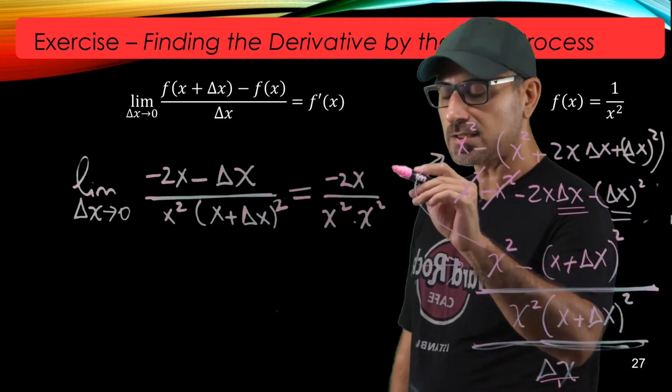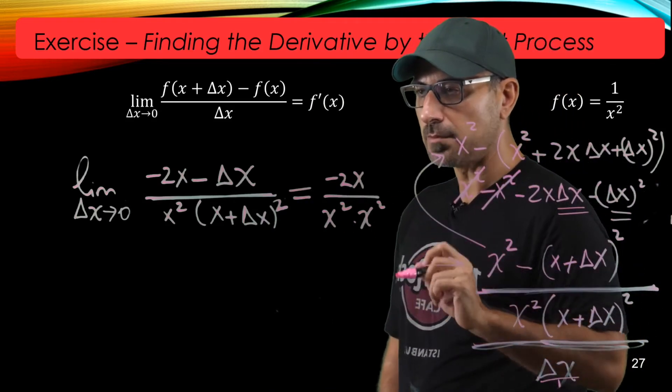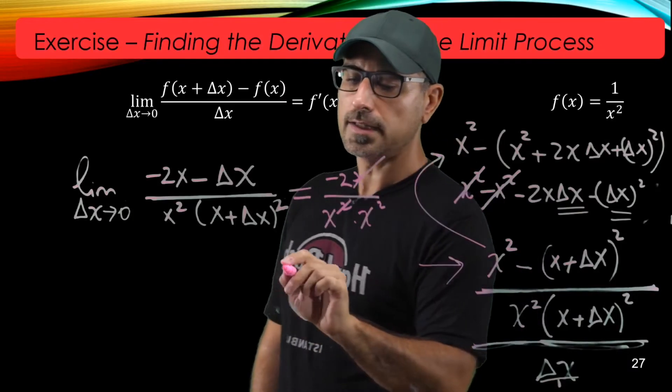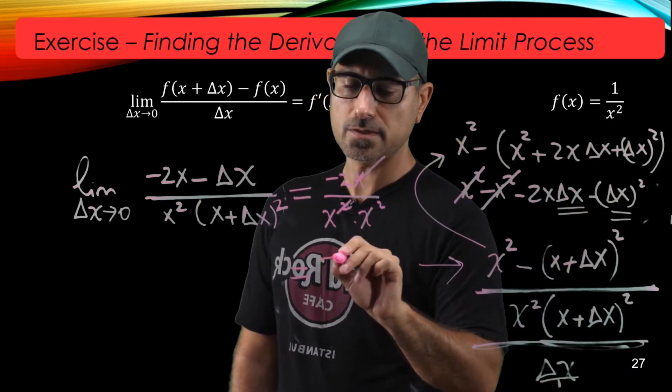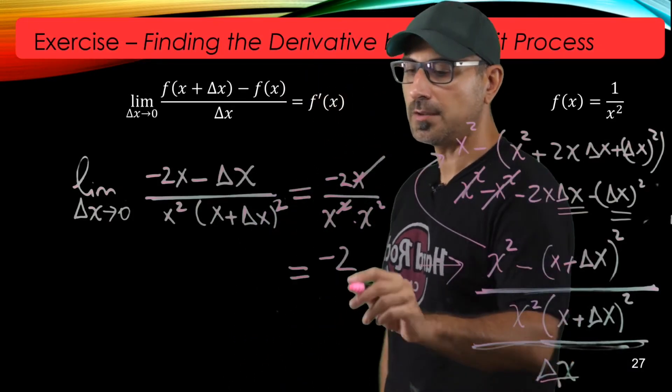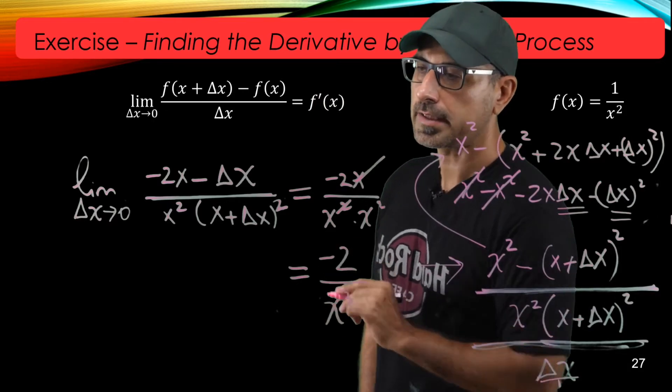So I can simplify this expression by dividing top and bottom by x. At the top I'm left with negative 2, and in the bottom I'm left with x cubed.